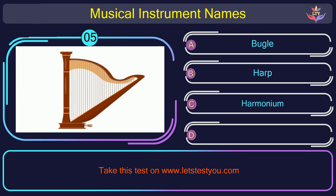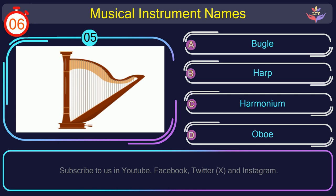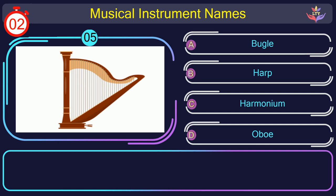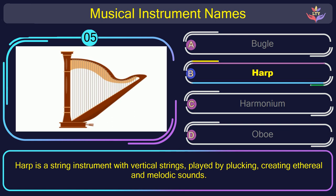Question number 5. Could you recognize the name of the musical instrument in this picture? The correct answer is option B: Harp. Harp is a string instrument with vertical strings, played by plucking, creating ethereal and melodic sounds.